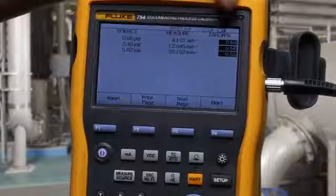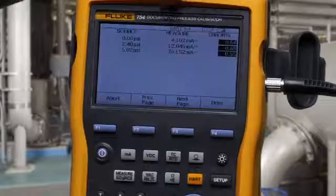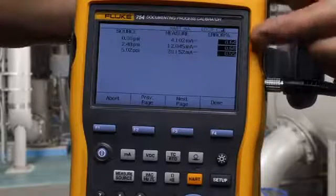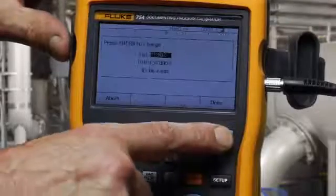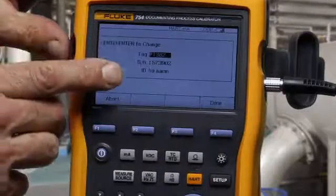If the found milliamp value deviates too far in value and the errors are greater than the test tolerance, they're flagged in a reverse video indication. Done. Tag, serial number, and who did the work. Done.